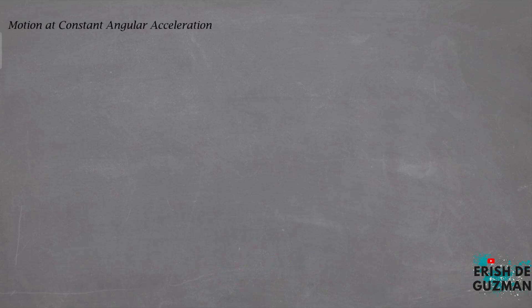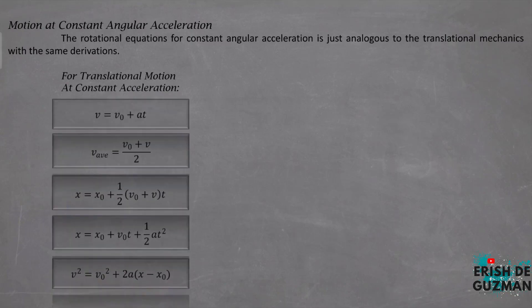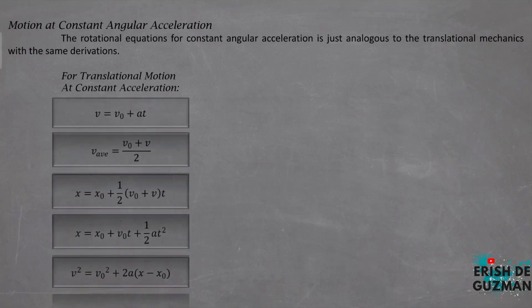Yung derivations and procedures na ginamit natin to develop the kinematic equations for linear motion under constant acceleration can also be used to derive a similar set of equations for the rotational motion under constant angular acceleration. The rotational equations are just analogous to the translational mechanics with the same derivations. From the constant acceleration equations sa translational motion, we have five formulas na na-derived natin sa kinematics lecture videos natin.